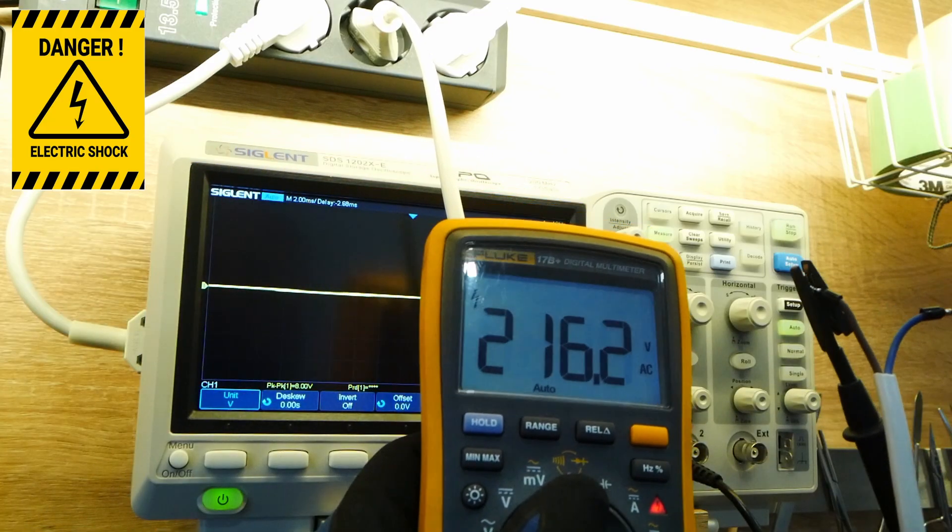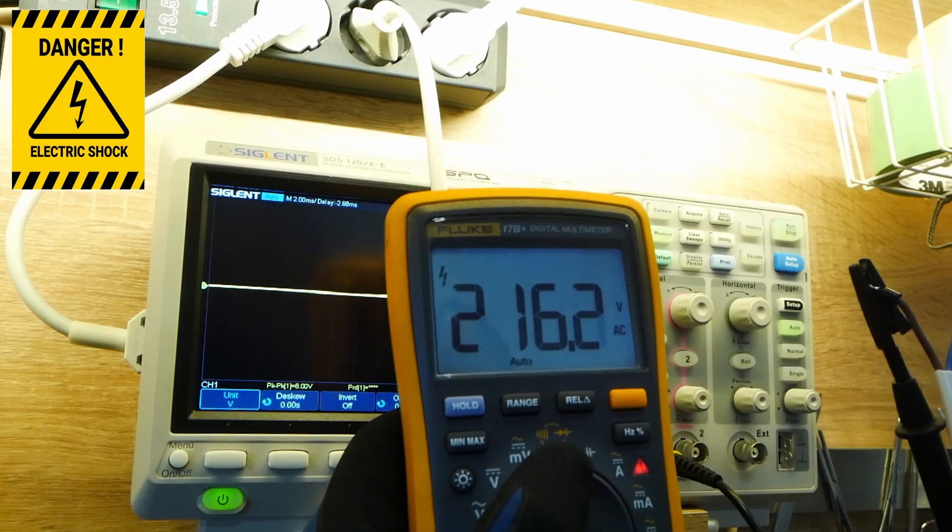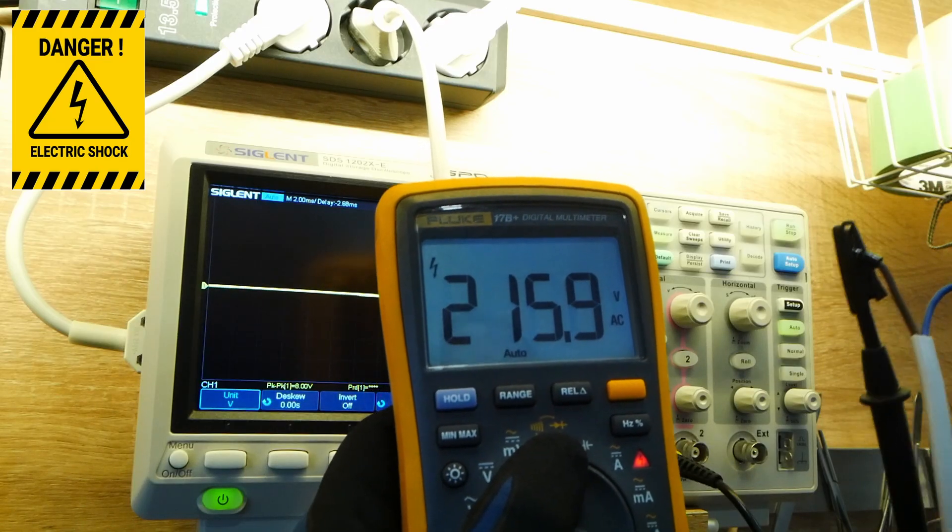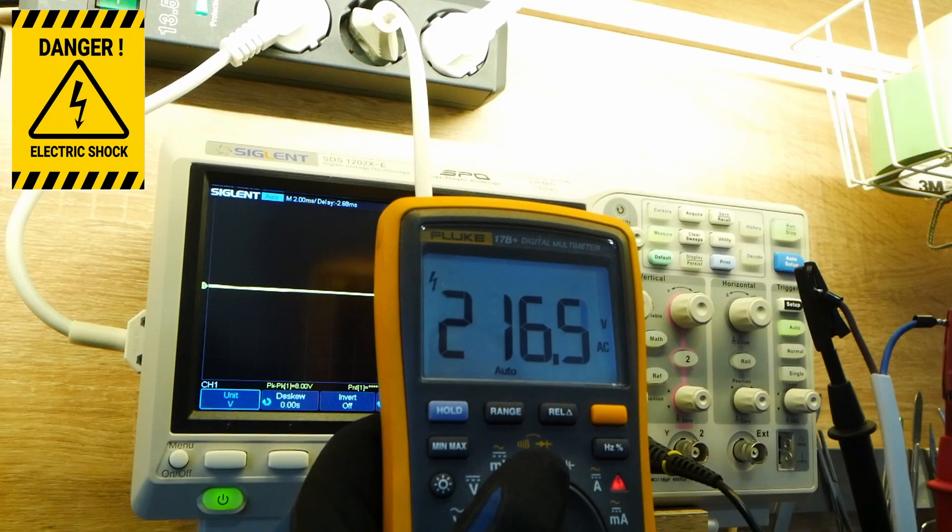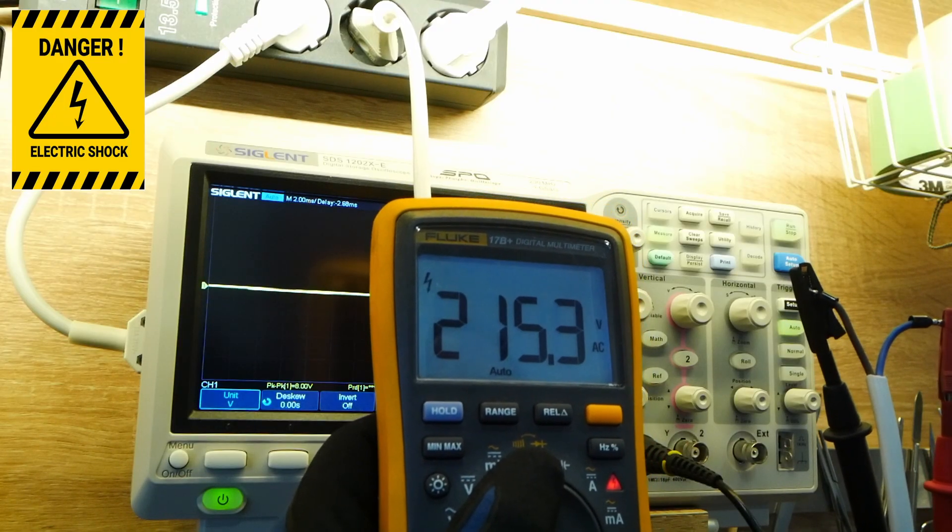Okay, so this is not a true RMS multimeter, but as you can see on this lead I have 216 volts AC.